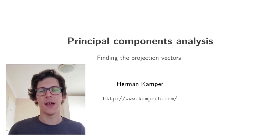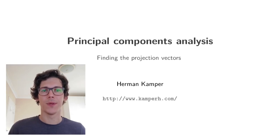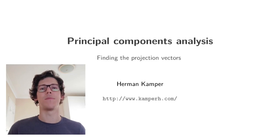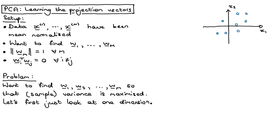At last, we come to the video where we will see how PCA actually finds the projection vectors. Here we quickly recap the setup that we're using. We've got some data, X1 up to X capital N, and we assume the data has been mean normalized.